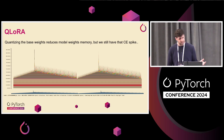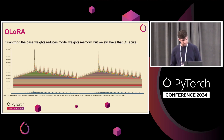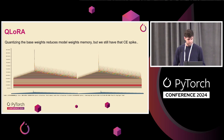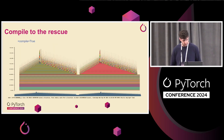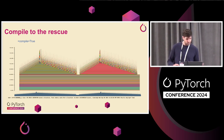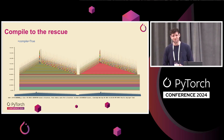Now we quantize the base weights to NF4. This saves about 10 gigs. We still have the spike, and now it's really prominent because all of the weights we've saved memory on are much smaller proportional to the cross-entropy. And then — compile equals true — look how much memory we save. The cross-entropy spike flattens out and we're now under 16 gigs pretty comfortably, which is great.